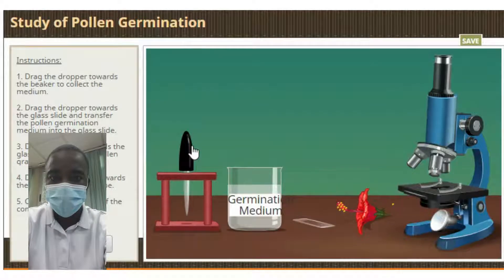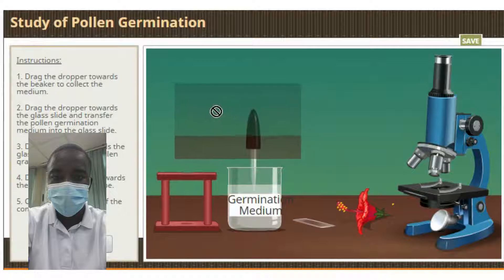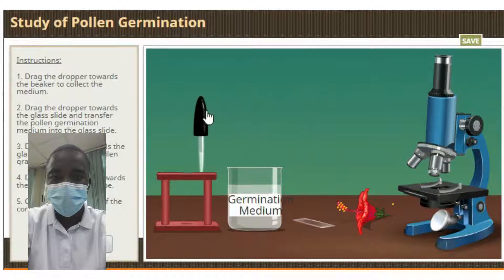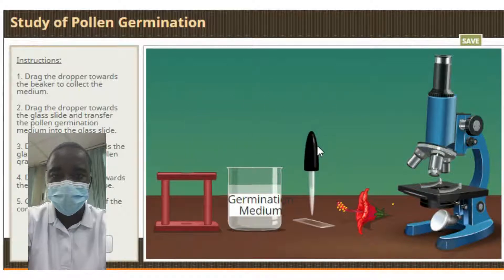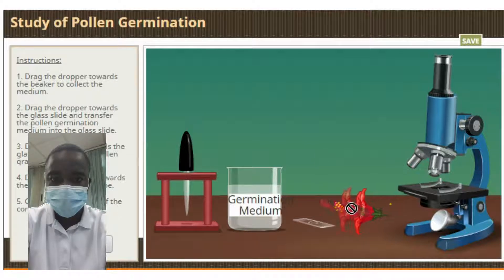The aim of this simulation is to study pollen germination on a slide. Most plants rely on animals to help them reproduce. This process is called pollination, and it happens when pollen from the male part of the plant fertilizes the female part of the plant.